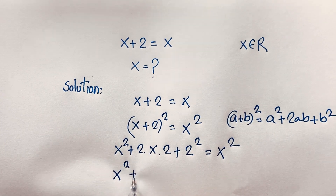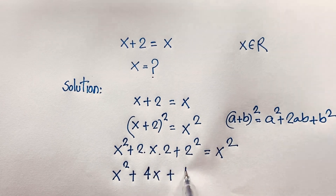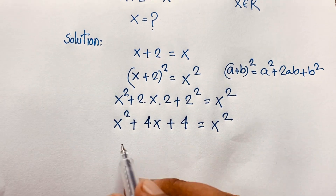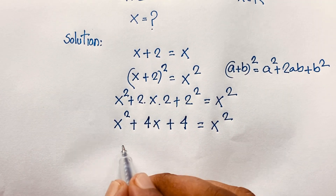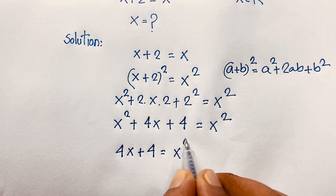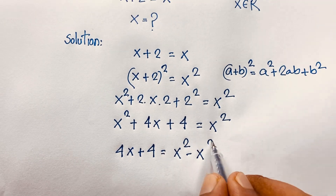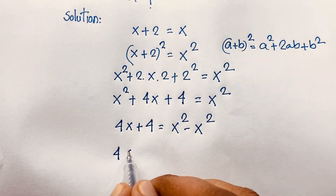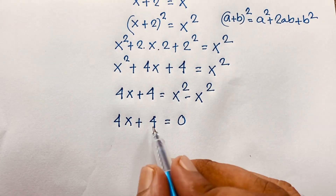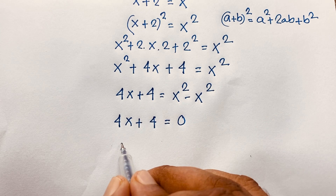Here 2 times 2 is 4, so 4x, and 2 to the power 2 is also 4, giving x² + 4x + 4 = x². Moving x² to this side it becomes negative, so x² cancels and we get 4x + 4 = 0.